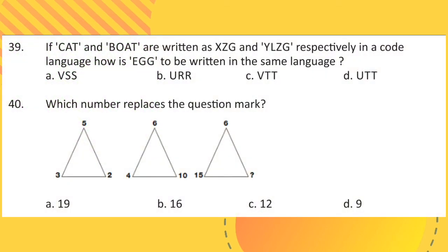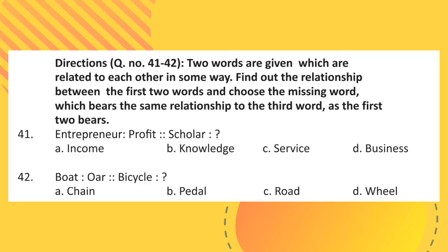Question 39: If cat and boat are written as X, Z, G and Y, L, Z, G respectively in a code language, how is egg to be written in the same language? Question 40: Which number replaces the question mark? Directions for questions 41 and 42: Two words are given which are related to each other in some way. Find out the relationship between the first two words and choose the missing word which bears the same relationship to the third word as the first two bear.